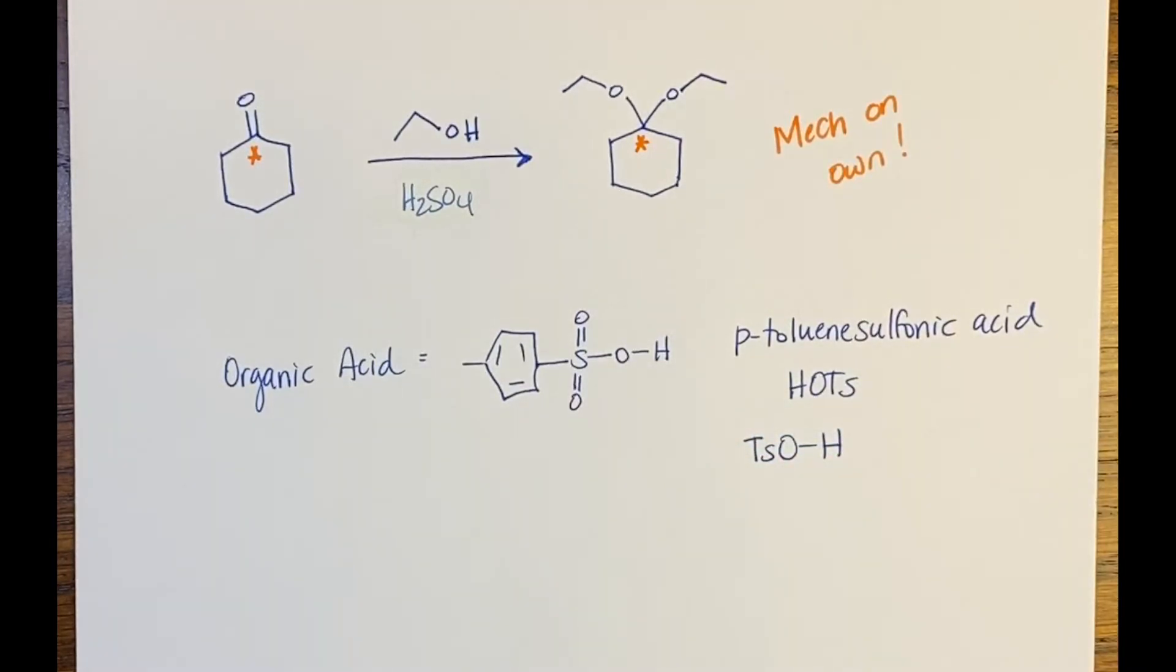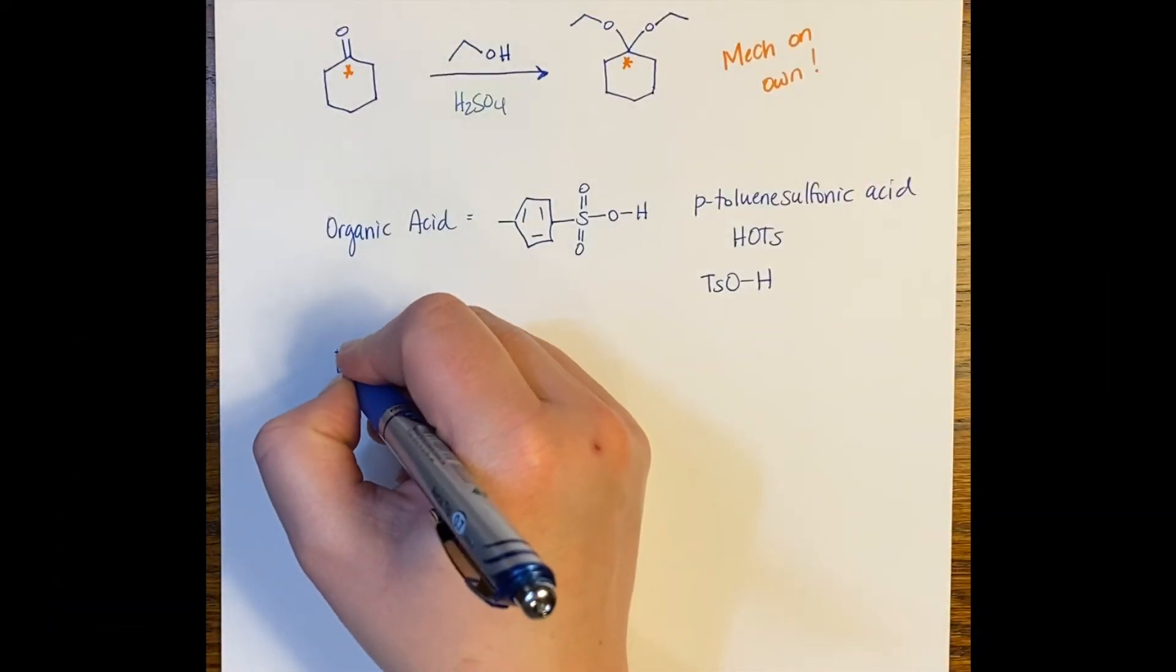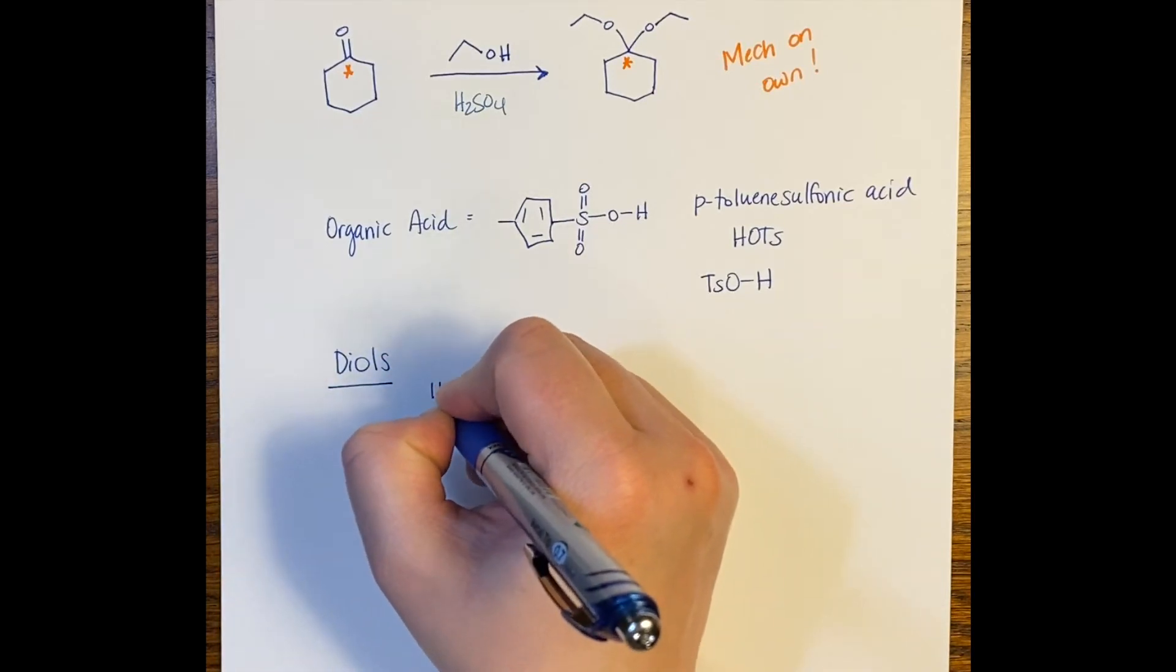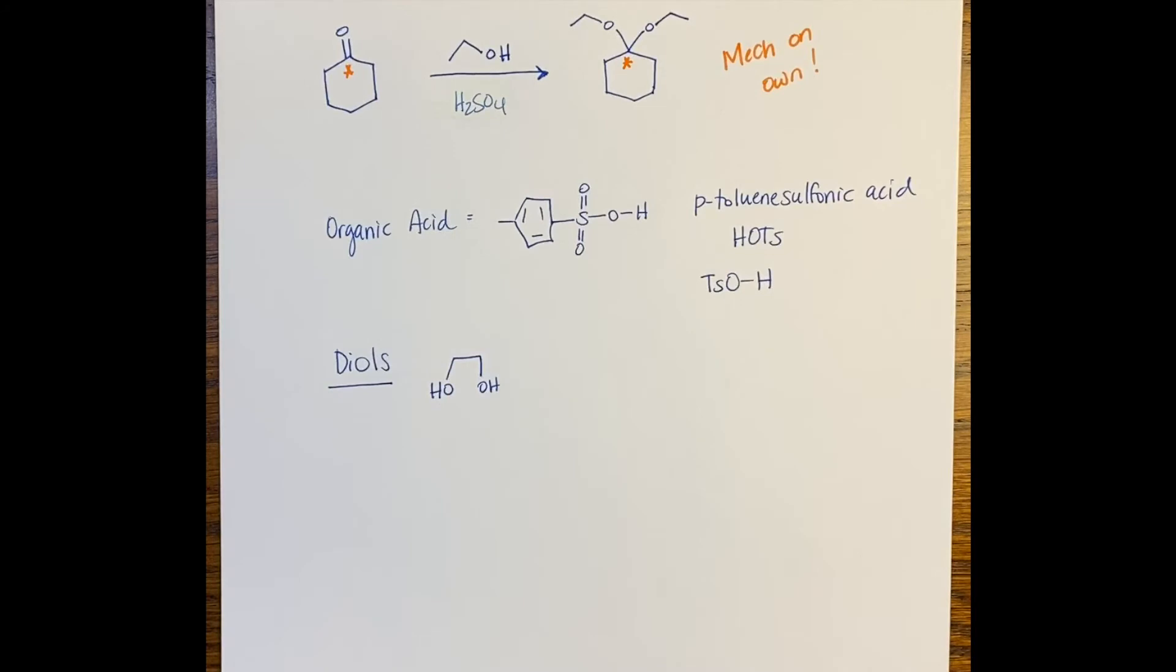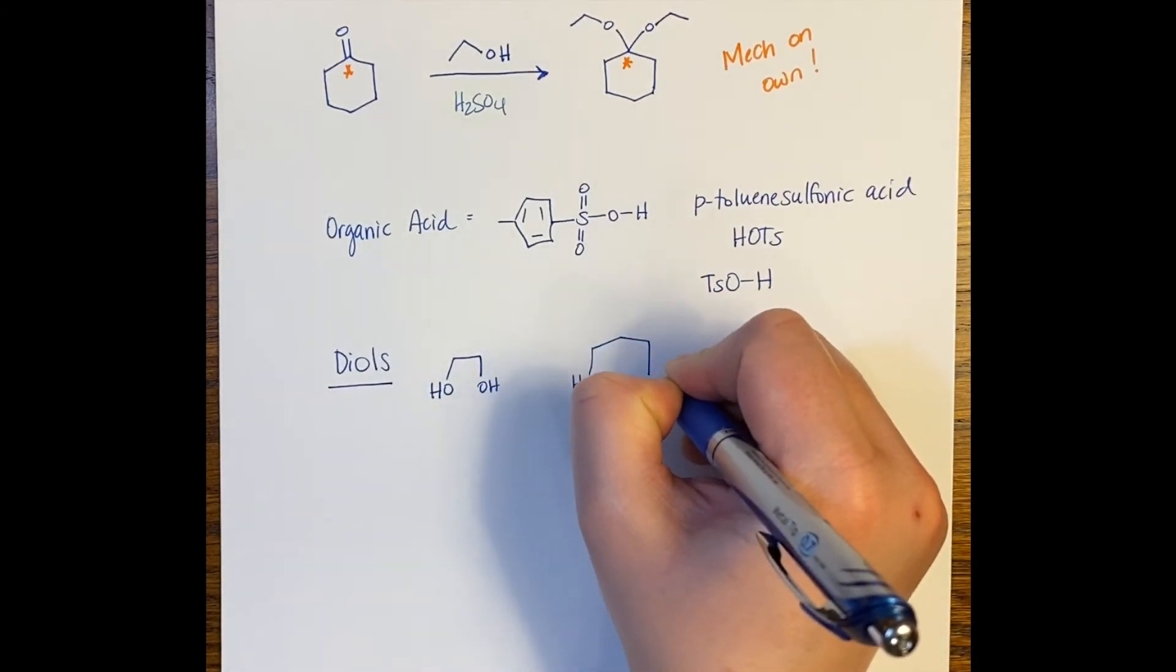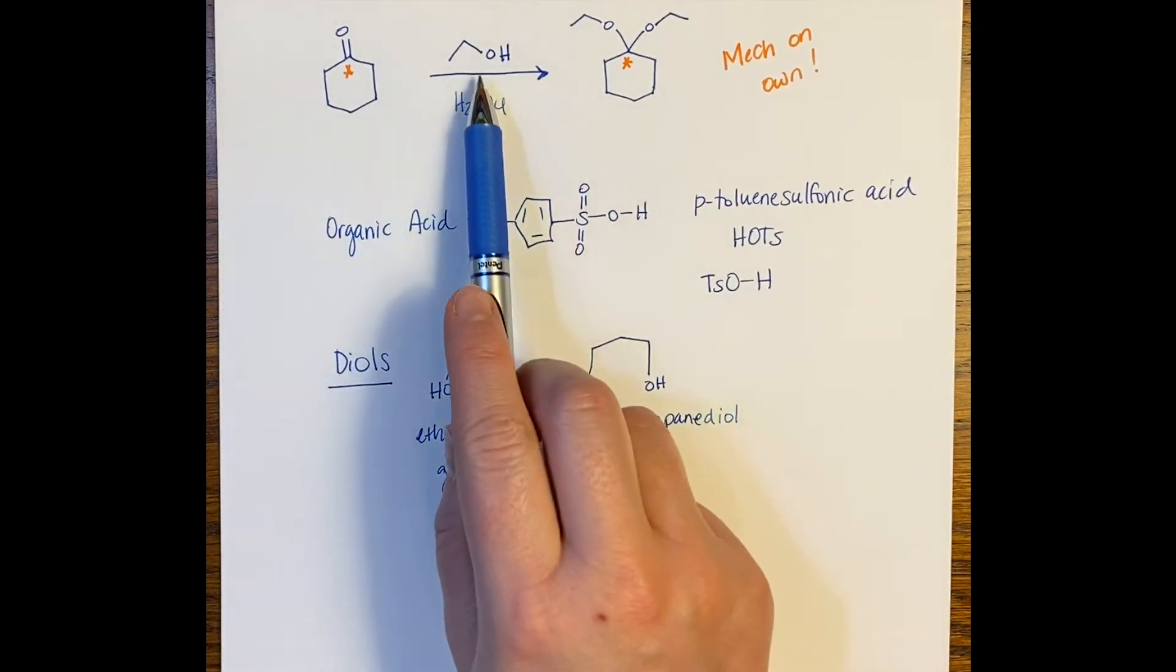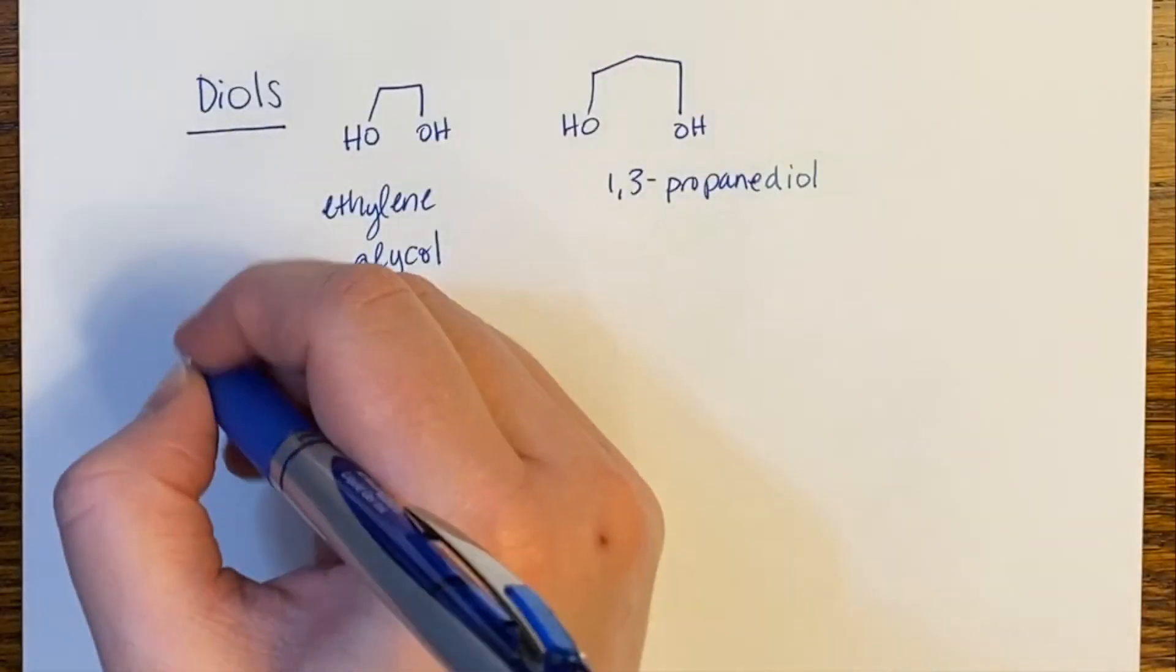So sometimes that's an organic acid that you might see. We also might use diols for our acids. So sometimes we use ethylene glycol, which is an ingredient in antifreeze. We can use 1,3-propanediol as our alcohol in the reactions. So that instead of using two equivalents of alcohol like we would up here, we can get away with using a single equivalent of these reactions.